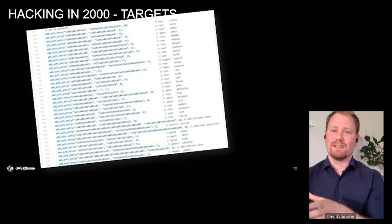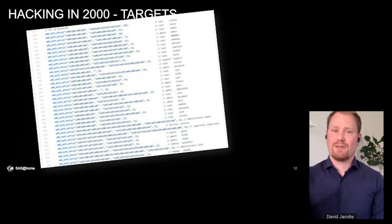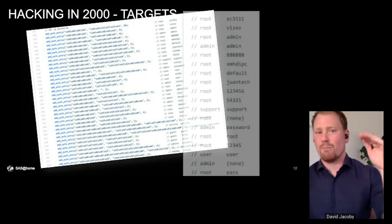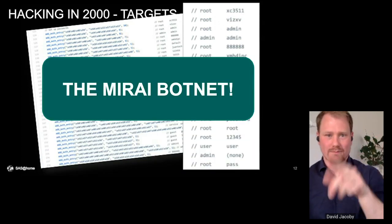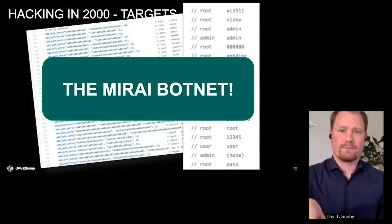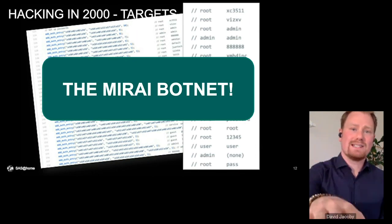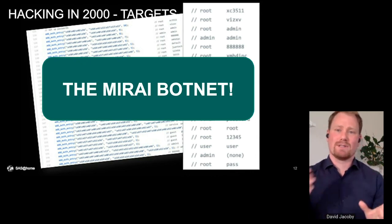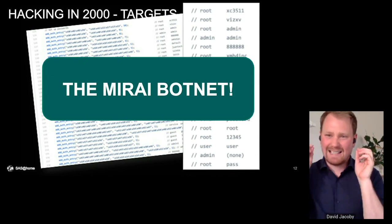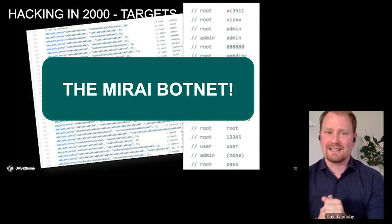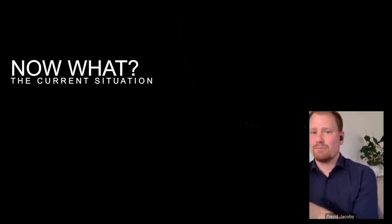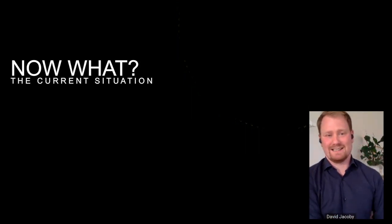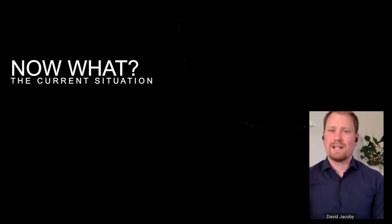Remember the screenshot I showed you in the beginning? Here's another screenshot of a modern attack. You can see it still has default usernames and default passwords — this is from the Mirai botnet — and some of the username and password combinations are exactly the same as we've seen since the 1980s. So the Mirai botnet and different IoT botnets are exploiting the same techniques, even with the same usernames and passwords, since the 1980s.